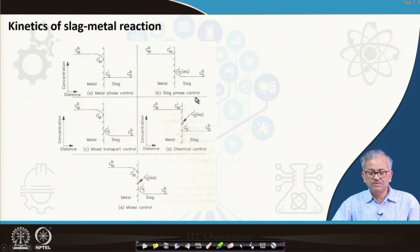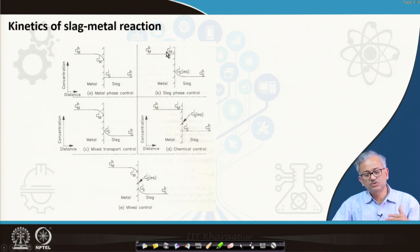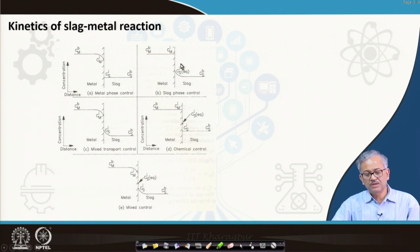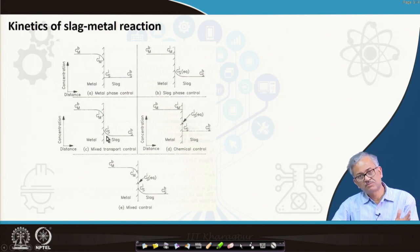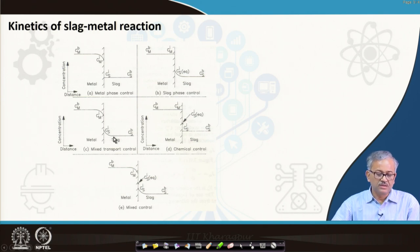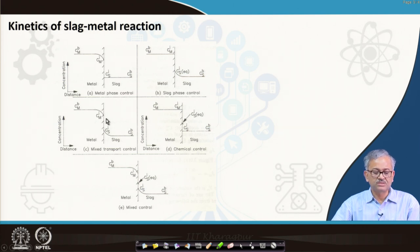Similarly, if it is slag phase mass transfer control, there is no concentration gradient in the metal phase because mass transfer on the metal phase is assumed to be very fast. The chemical reaction at the interface is also fast such that complete partitioning of the impurity has taken place at the interface, and the only resistance is on the slag phase — from the interface to the slag bulk there is a concentration gradient.